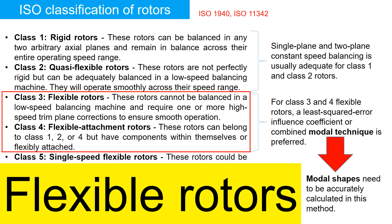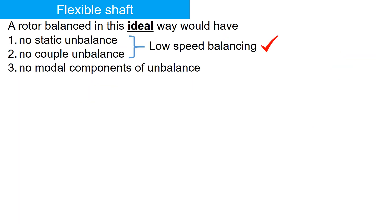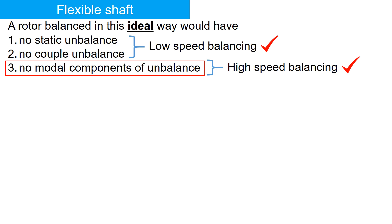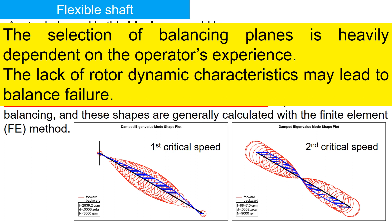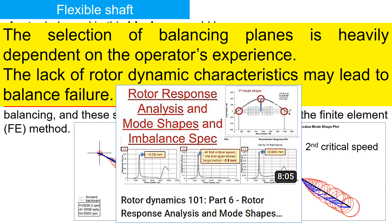Let's shift our focus to flexible rotors and their correction. For a flexible shaft, start with low speed balancing for static and coupled imbalance. Rotor dynamic analysis can help guide mode shape balancing at high speed. Mode shapes are key to modal balancing, and balancing plane selection relies on the operator's experience and rotor dynamics. Please explore part 6 of my video for more on mode shapes.